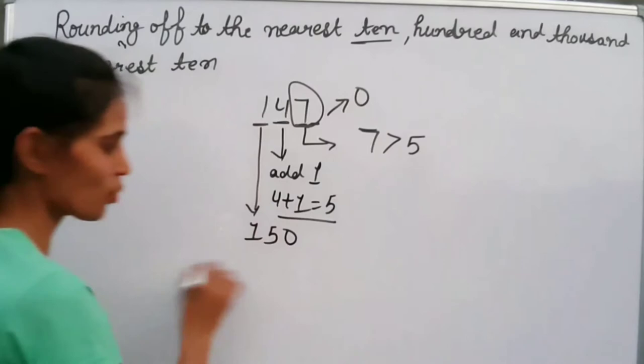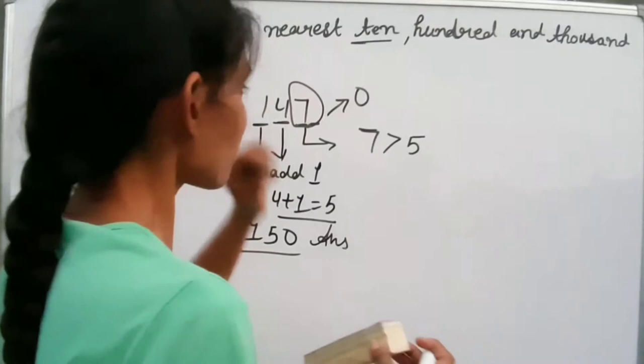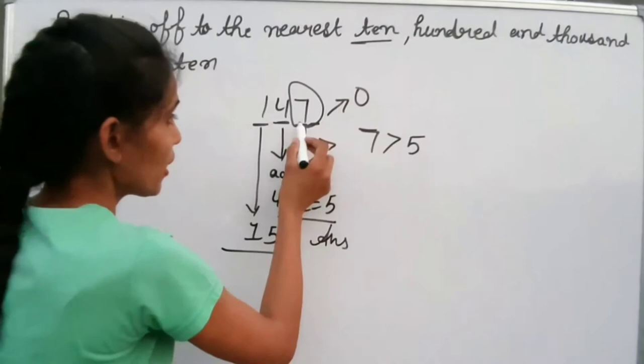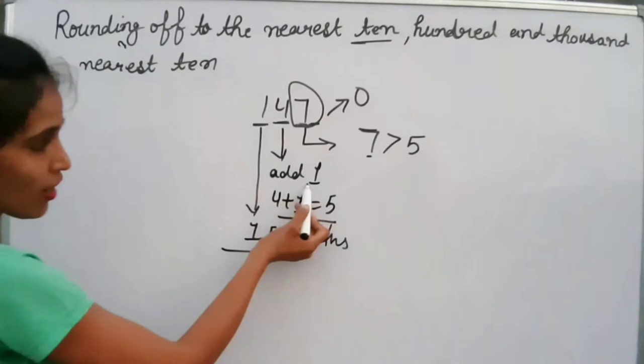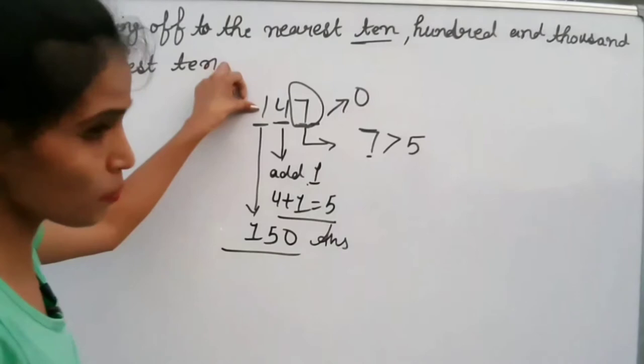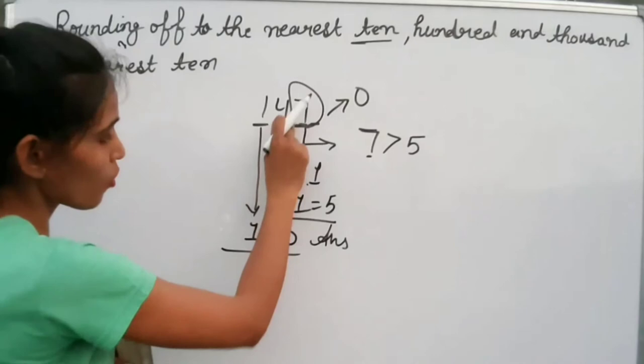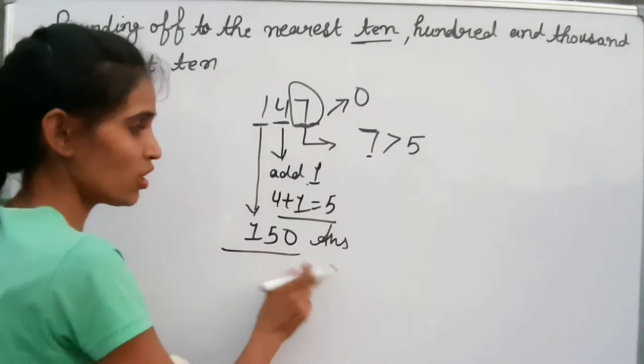Let's recap: for rounding to the nearest 10, we look at the ones place value. If it is greater than 5, we add 1 to the tens place. Here, 4 plus 1 gives 5, and we replace 7 with 0. The answer is 150.